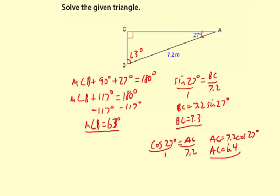Now we have solved the rest of the triangle. We have measure of angle B is 63 degrees. We have BC is about 3.3. And AC is about 6.4. I know I use equal sign here,